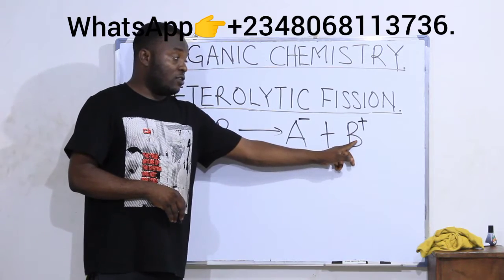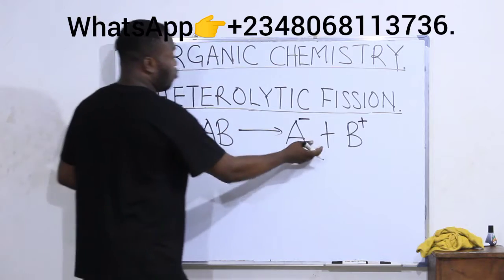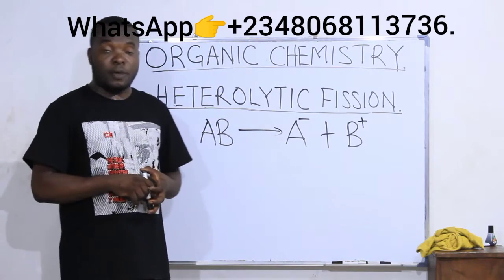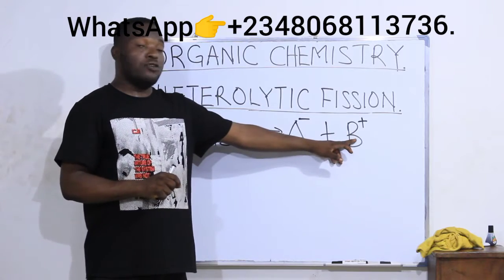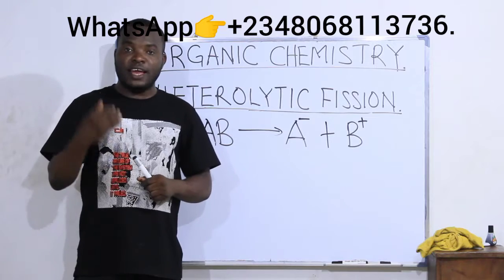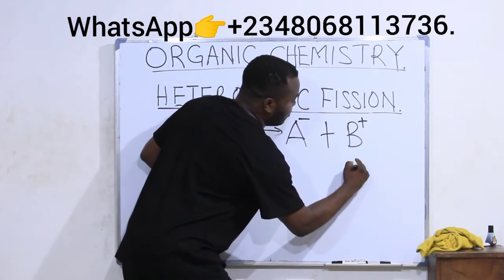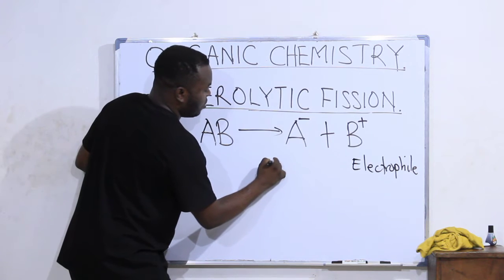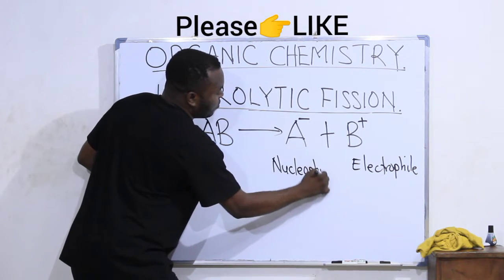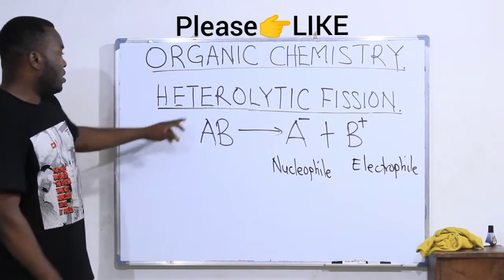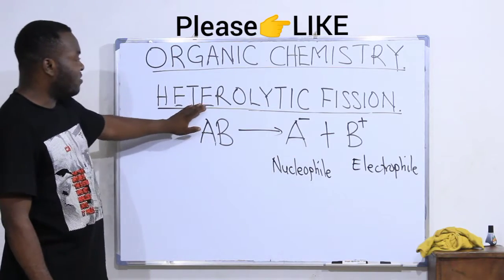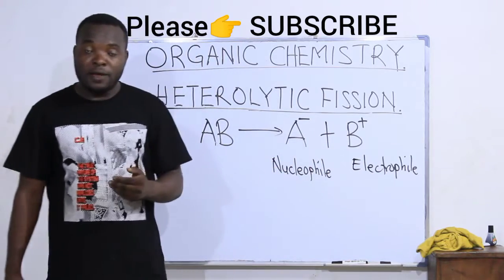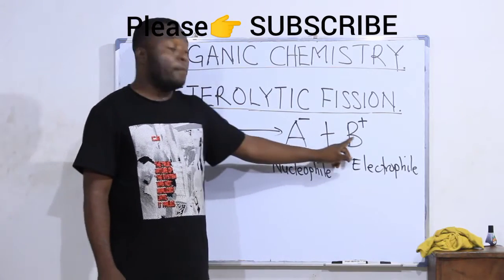The one that took the two electrons is given the negative charge; the one that lost its electron is given a positive charge. In this case we no longer call them free radicals as in homolytic bond breaking — rather we call them ions. The positively charged ions are called electrophiles, while the negatively charged ion is known as the nucleophile. The products formed in heterolytic bond breaking are electrophiles and nucleophiles, because they bear charges — negative and positive charges.